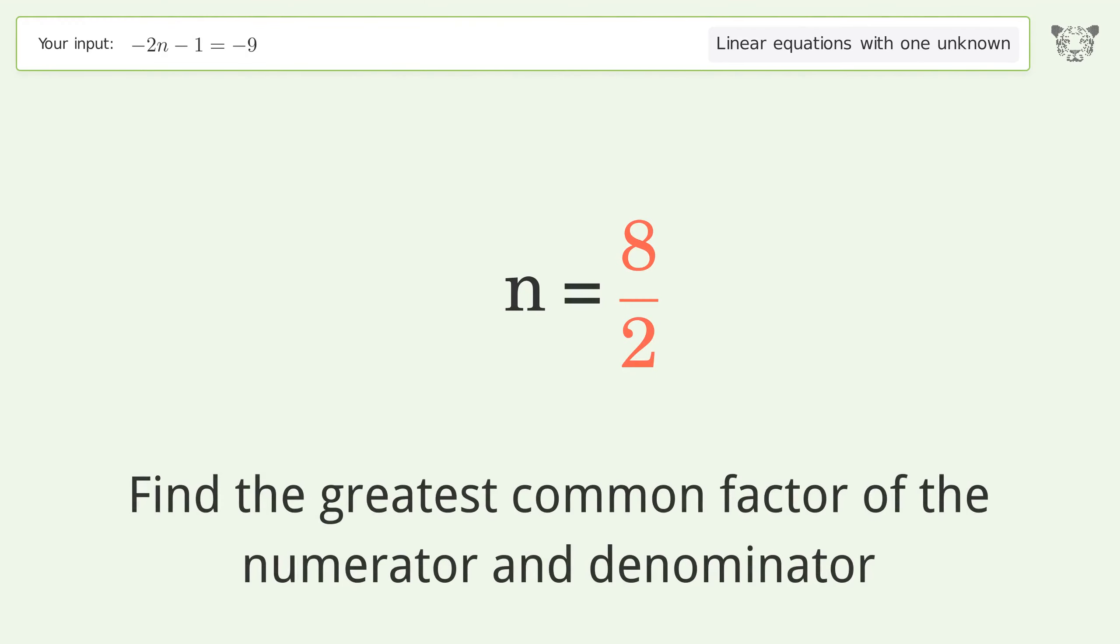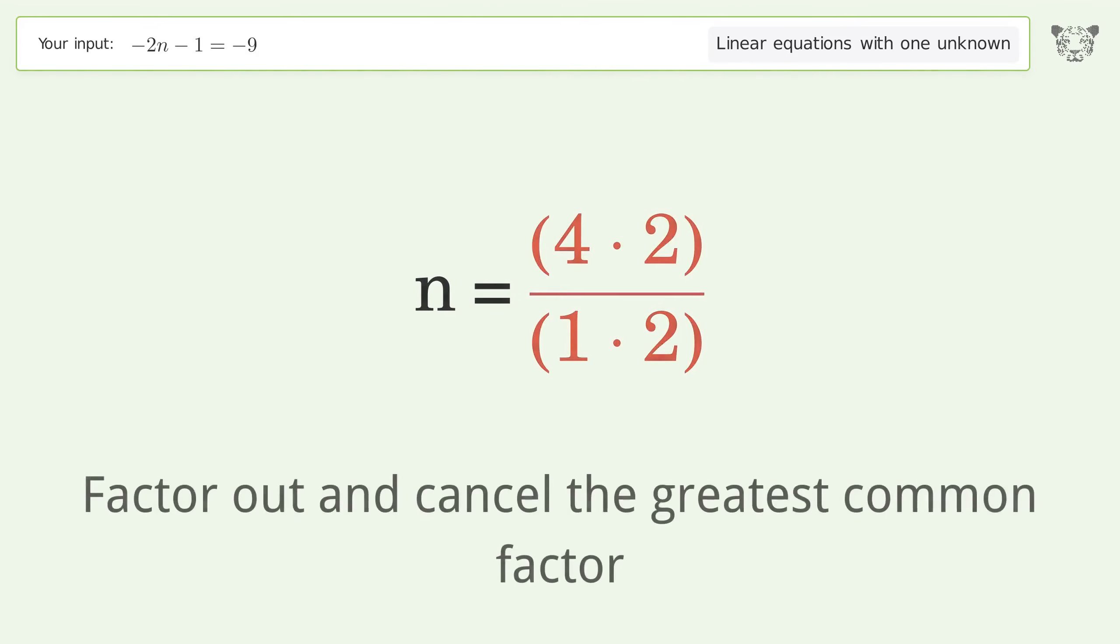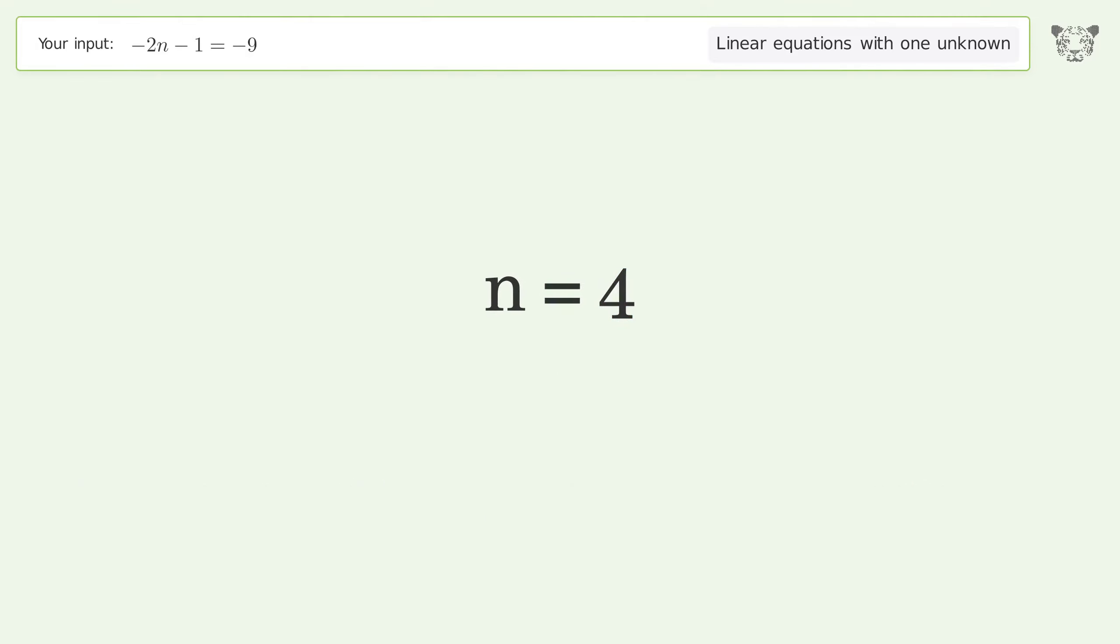Find the greatest common factor of the numerator and denominator. Factor out and cancel the greatest common factor. And so the final result is n equals 4.